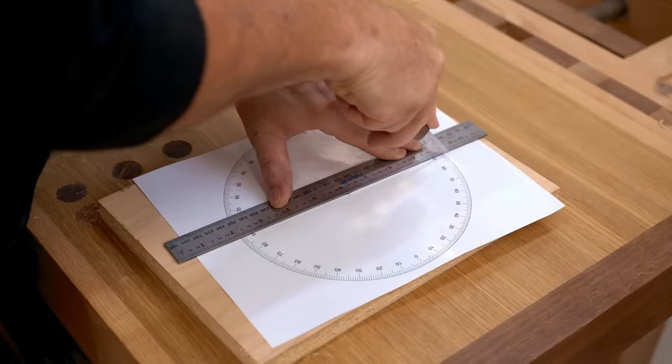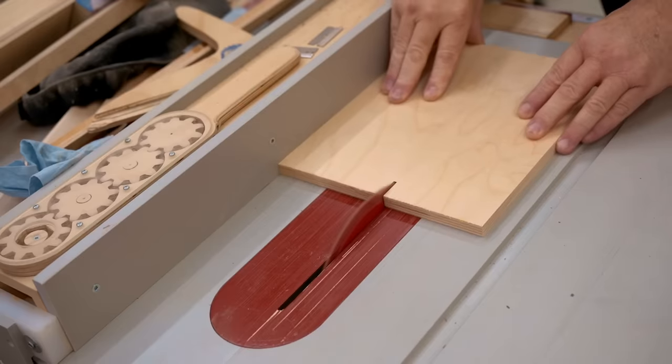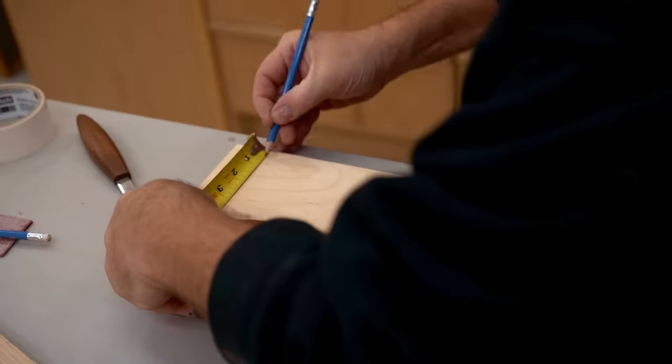The first thing I need for this is the correctly sized protractor and I need to cut that in half. That will be stuck on the piece of plywood that I'm going to cut out next.